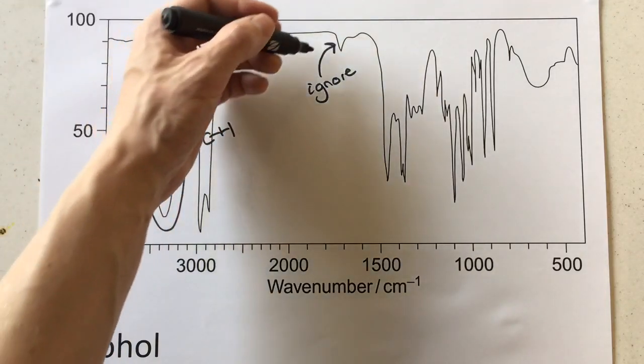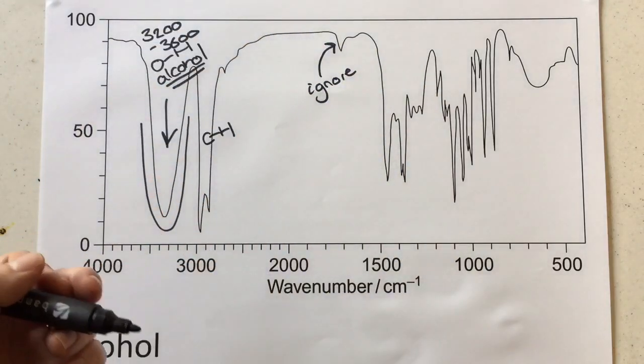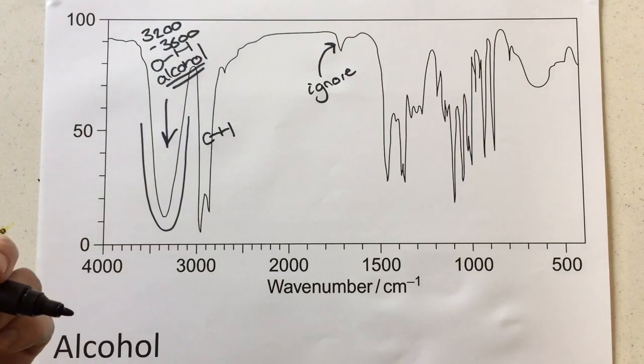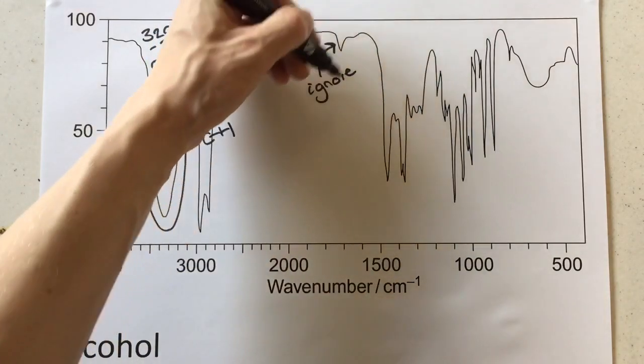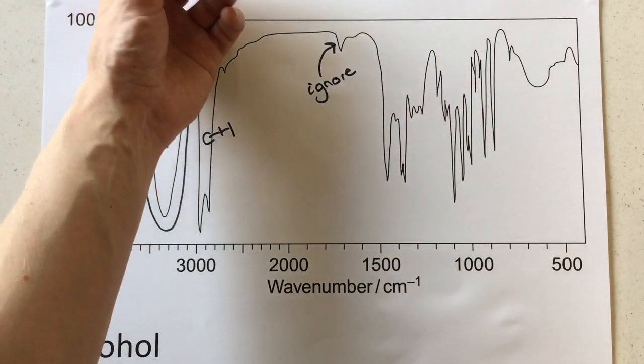You might think, oh, that looks like an alkene one, but there's another example that does include an alkene peak which you'll find on the channel. You can have a look at that one and see how sharp and how major they'll make that peak if they want you to notice it.